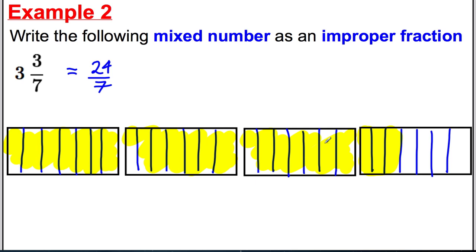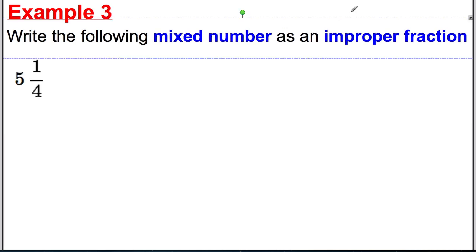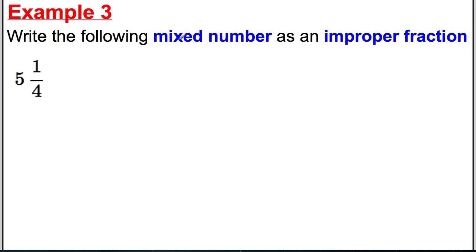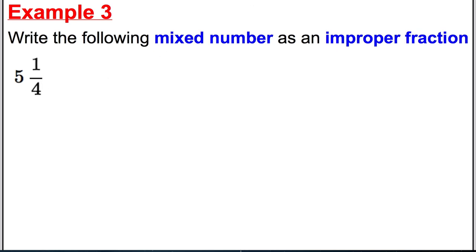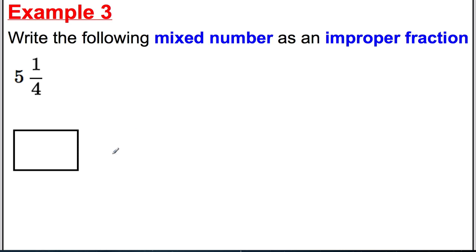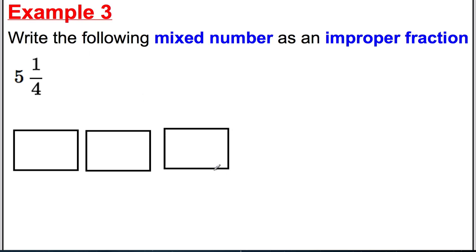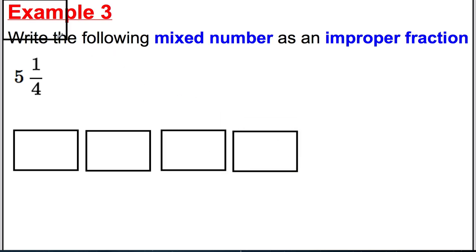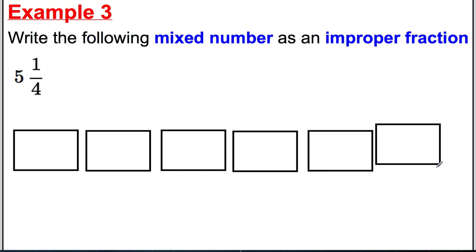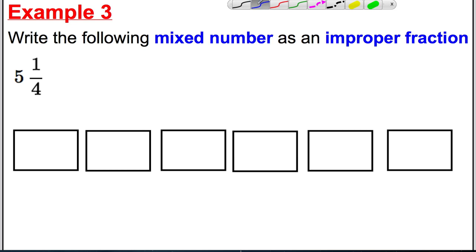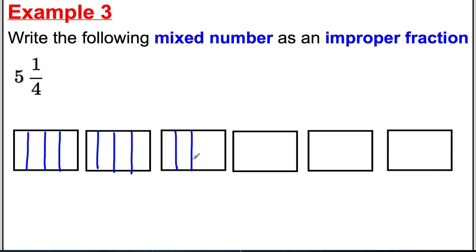Last example — example three: write the following mixed number as an improper fraction — five and a quarter. Five and a quarter is between five and six, so we need six boxes, each divided into quarters.